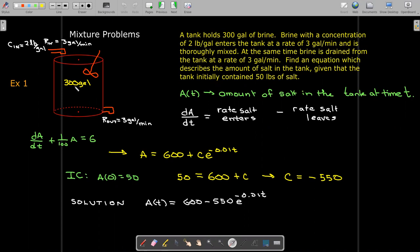And so we're going to maintain 300 gallons of brine. And so it's going to approach then a concentration of 2 gallons. I mean, 2 pounds per gallon times 300 gallons. So the amount of salt will approach 600.